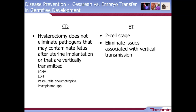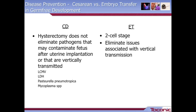When developing a germ-free rodent, they are typically developed by one of two mechanisms: cesarean derivation or embryo transfer. Under cesarean derivation, it's important to note that hysterectomy does not always eliminate pathogens that can contaminate the fetus after uterine implantation. Specific diseases can be vertically transmitted, including LCMV, LDH, Pasteurella pneumotropica, and mycoplasma. With embryo transfer, animals are typically developed at the two-cell stage, which allows us to eliminate issues associated with vertical transmission or cesarean derivation.